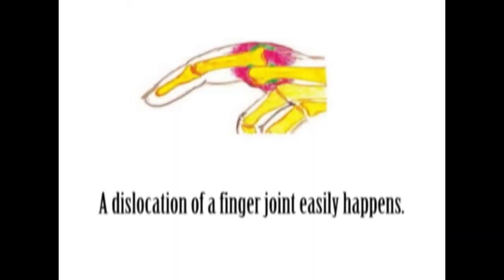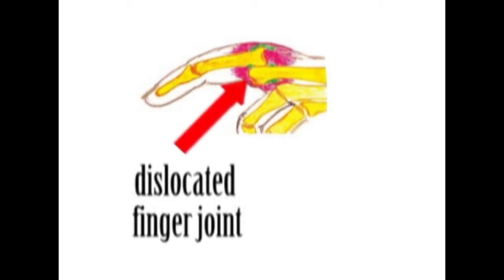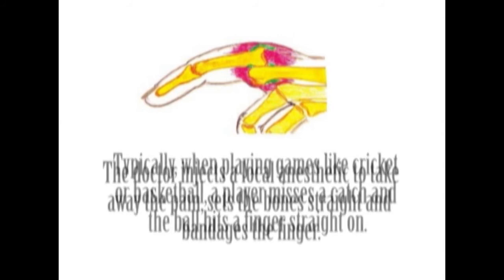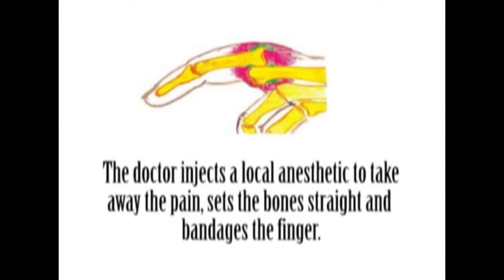A dislocation of a finger joint easily happens. Dislocated finger joint. Typically, when playing games like cricket or basketball, a player misses a catch and the ball hits the finger straight on. The doctor injects a local anesthetic to take away the pain, sets the bone straight, and bandages the finger.